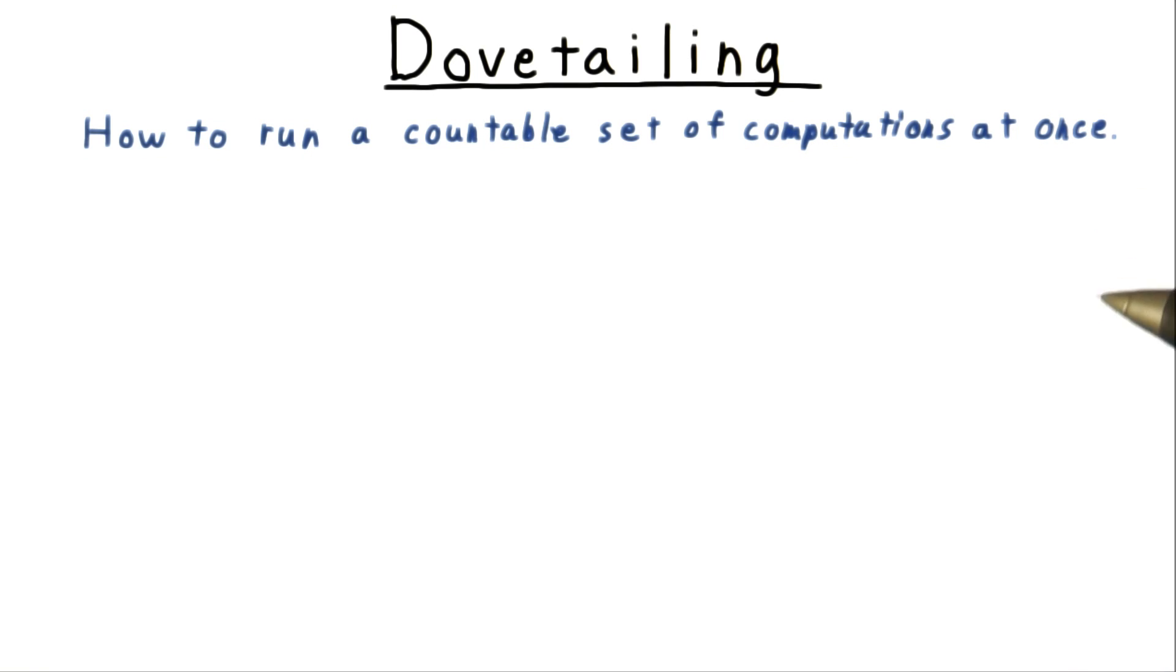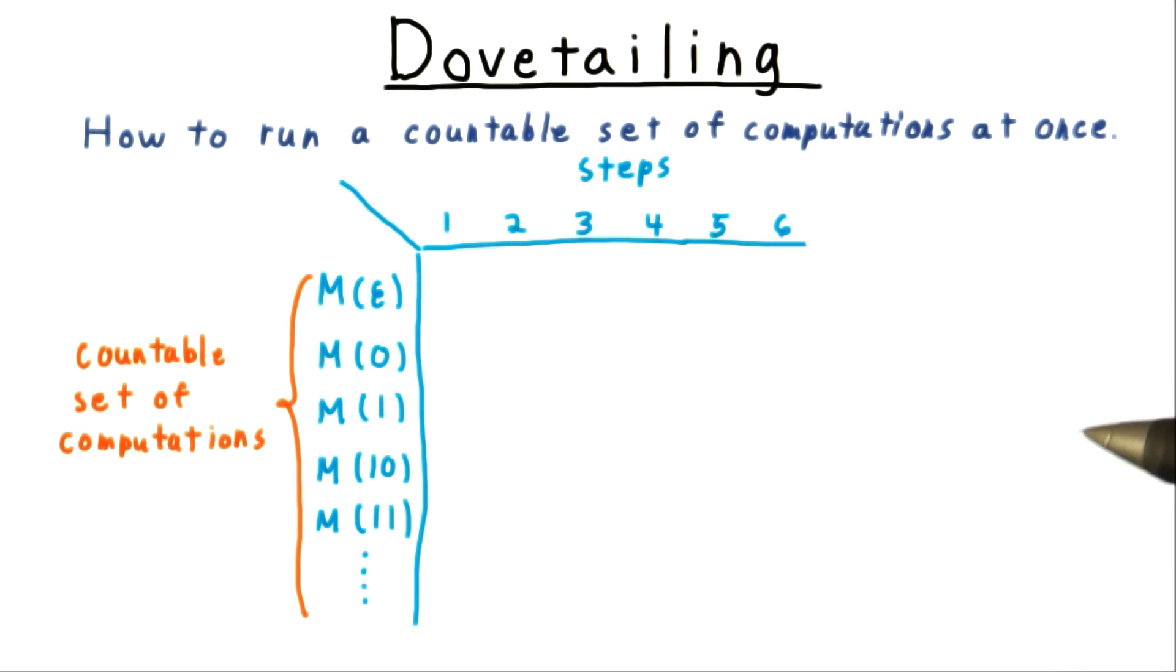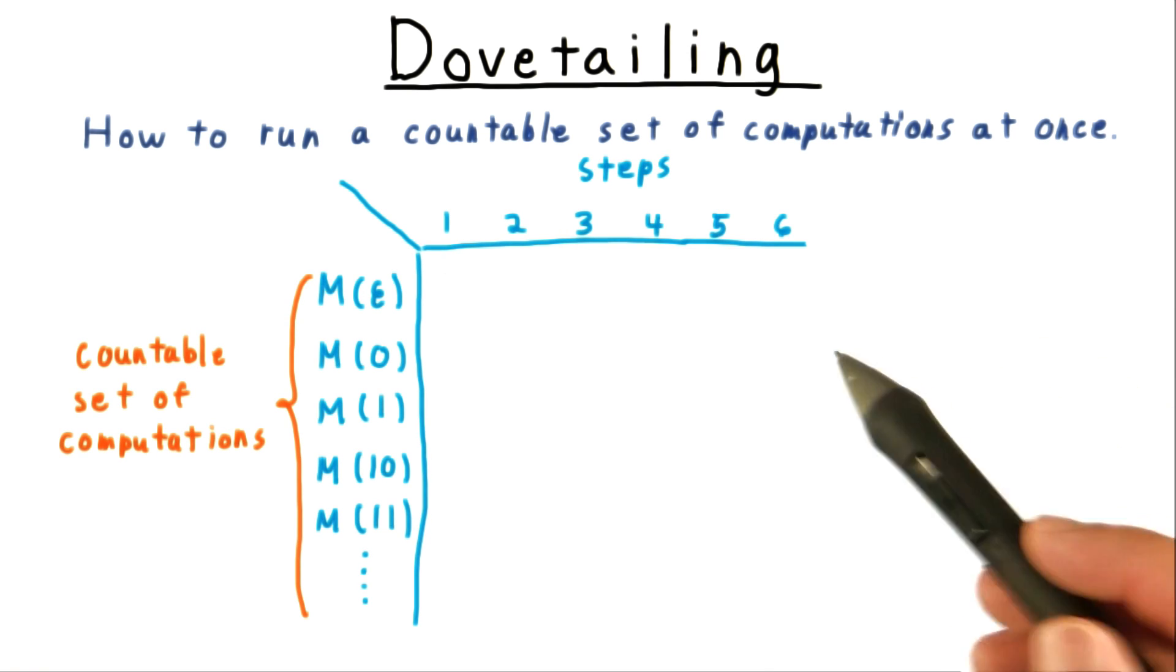Here's the dovetailing trick, which lets you run a countable set of computations all at once. We'll illustrate the technique for the case where we're simulating a machine M on all binary strings with this table here.